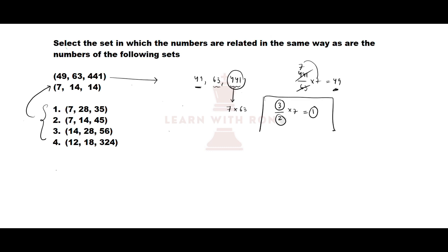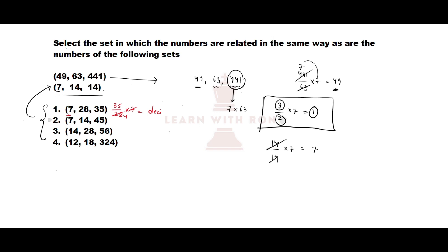Let us verify this pattern for the second set of numbers: 7, 14 and 14. The 3rd number is 14, the 2nd number is also 14, and if we divide and multiply by 7 we get 1 into 7 equals 7, which is the first number. This verifies our pattern. Now let us check the options. For the first option: 3rd number 35 divided by 2nd number 28, multiplied by 7 — 35 divided by 4 gives a decimal value, not a natural number, so this is not our option.